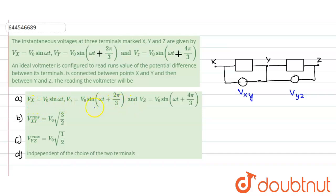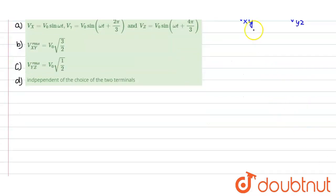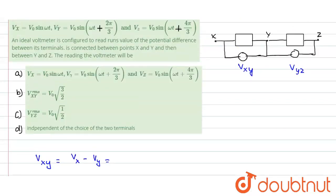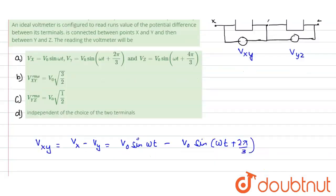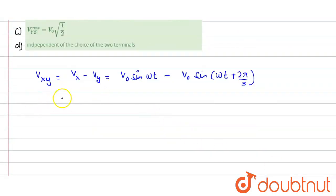Vx = V₀ sin(ωt) is given. We need the RMS values of Vxy and Vyz. Now, Vxy is the potential difference between x and y, so Vxy = Vx − Vy = V₀ sin(ωt) − V₀ sin(ωt + 2π/3). Taking V₀ common, we get V₀ [sin(ωt) − sin(ωt + 2π/3)]. We can apply the sine subtraction formula: sin C − sin D.